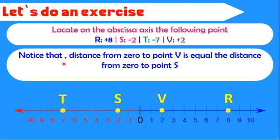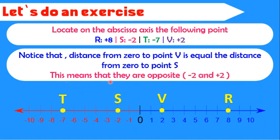Notice that the distance from 0 to point V is equal to the distance from 0 to point S. This means that they are opposite. Minus 2 and plus 2 are opposite signed numbers because they are the same number but different signs.